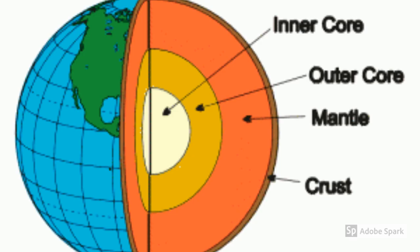The earth consists of four layers. The first layer is known as the inner core and is made up of solid nickel and iron. Around it is the outer core, which is a molten region that is also made up of nickel and iron.